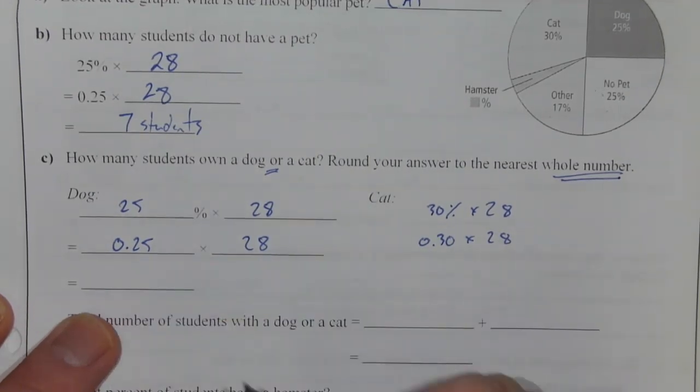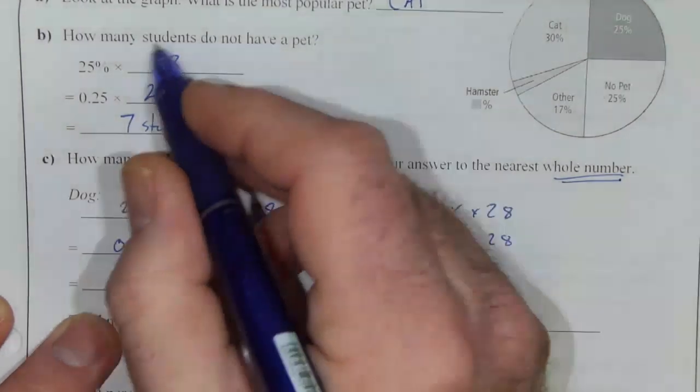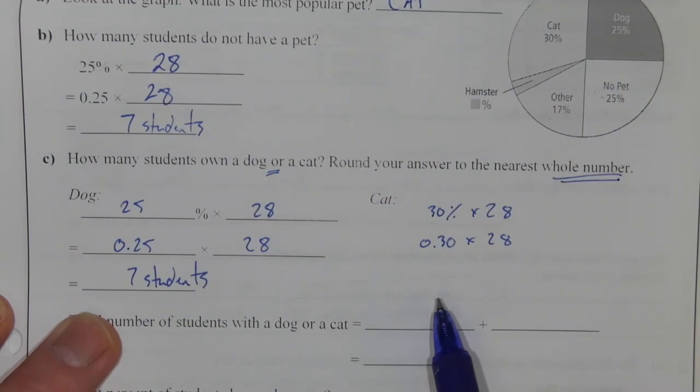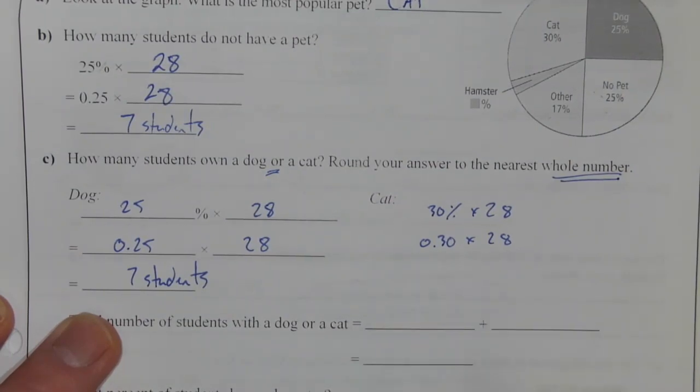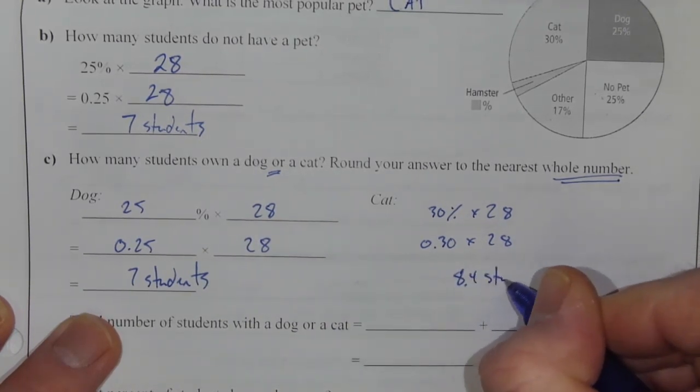0.25 times 28 is 7 students. Same calculation as above, with 7 students not having a pet. And, here we've got 0.3 times 28, which gives us 8.4 students.